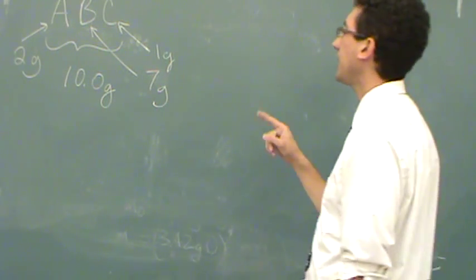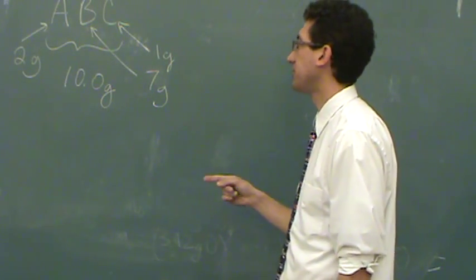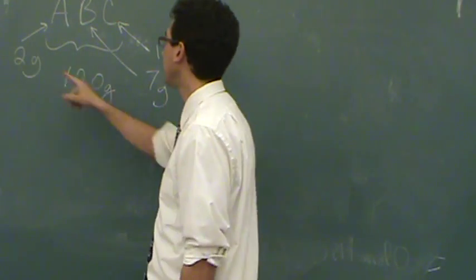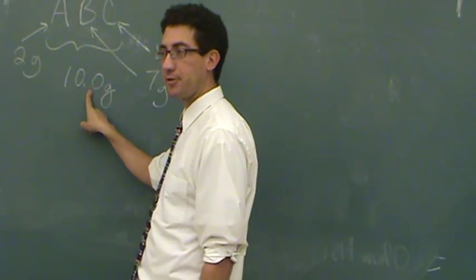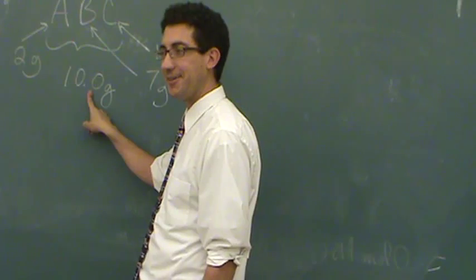Ten grams total, two grams of A, seven grams of B, one gram of C. Now notice, the sum of these will equal the total rate. Hopefully that's true.